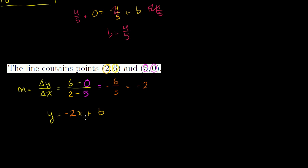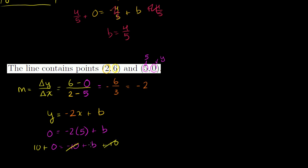We can use one of these points to solve for b. I'll use (5, 0) since it's nice to have a 0. So y = 0 when x = 5: 0 = -2(5) + b, giving 0 = -10 + b. Adding 10 to both sides, b = 10. So the equation is y = -2x + 10.